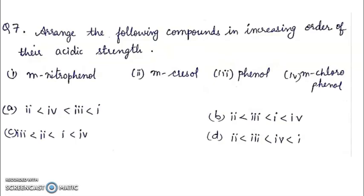Question 7: Arrange the following compounds in the increasing order of their acidic strength: meta-nitrophenol, meta-cresol, phenol, meta-chlorophenol. Electron withdrawing groups increase acidic strength, and electron donating groups decrease acidic strength. Most acidic will be nitro because it is maximum electron withdrawing. Least acidic will be meta-cresol because the CH3 group is electron donating. So our correct answer is D.